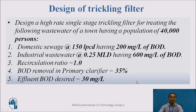Let's work through an example: design a high rate single stage trickling filter for treating wastewater from a town with a population of 40,000 persons. Given data: domestic sewage at 150 liters per capita per day with 200 mg/L BOD; industrial wastewater at 0.25 MLD with 600 mg/L BOD; recirculation ratio R = 1.0; BOD removal in primary clarifier = 35%; desired effluent BOD = 30 mg/L.